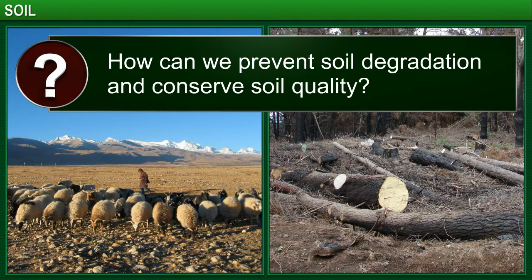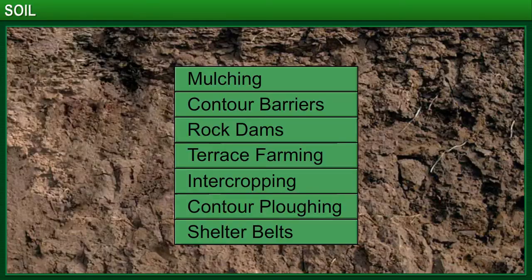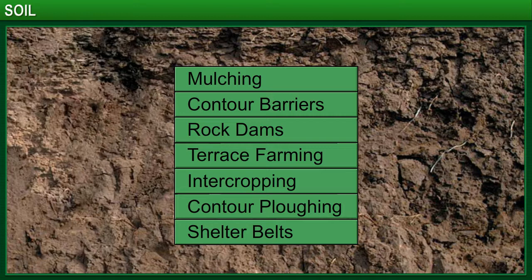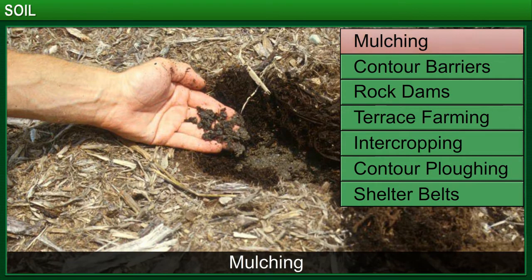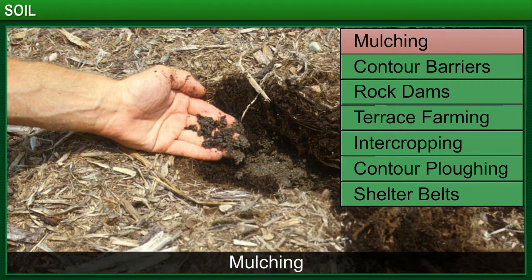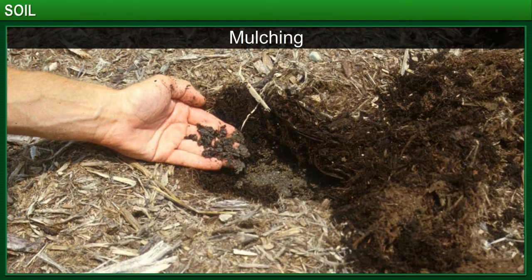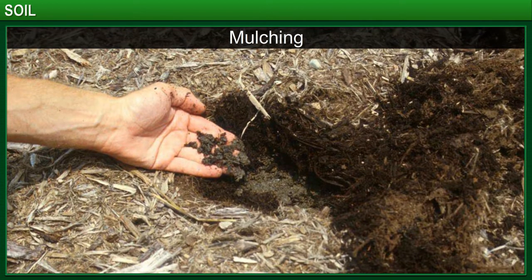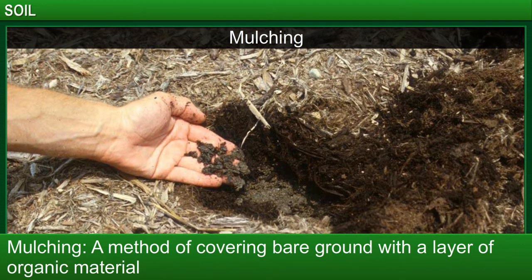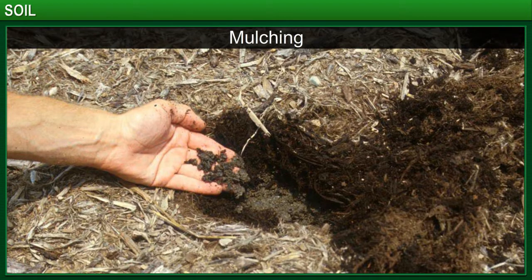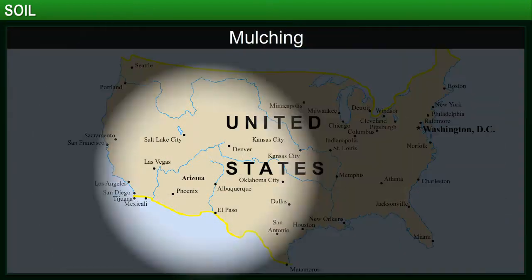How can we prevent soil degradation and conserve soil quality? Some methods to conserve soil quality are mulching, contour barriers, rock dams, terrace farming, intercropping, contour plowing and shelter belts. Mulching helps to trap moisture in the soil and moderate soil temperature. It involves covering the bare ground between plants with a layer of organic material like straw. Mulching is widely used in dry regions like Arizona, USA.